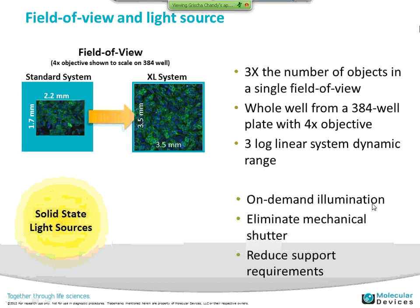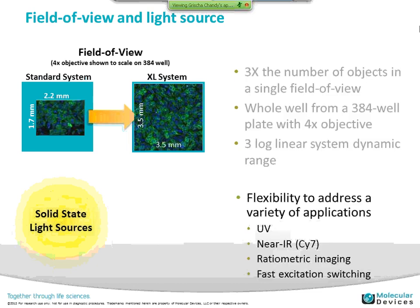The default on the system is an on-demand illumination light source, which eliminates mechanical shutter failures and reduces support requirements — essentially you don't have to change light bulbs anymore. With the XLS, there are additional light sources available to direct a variety of applications — additional light sources allow illumination in the UV and near-IR, which is an expanding set of dyes. We also have ratiometric imaging and fast excitation switching light sources.